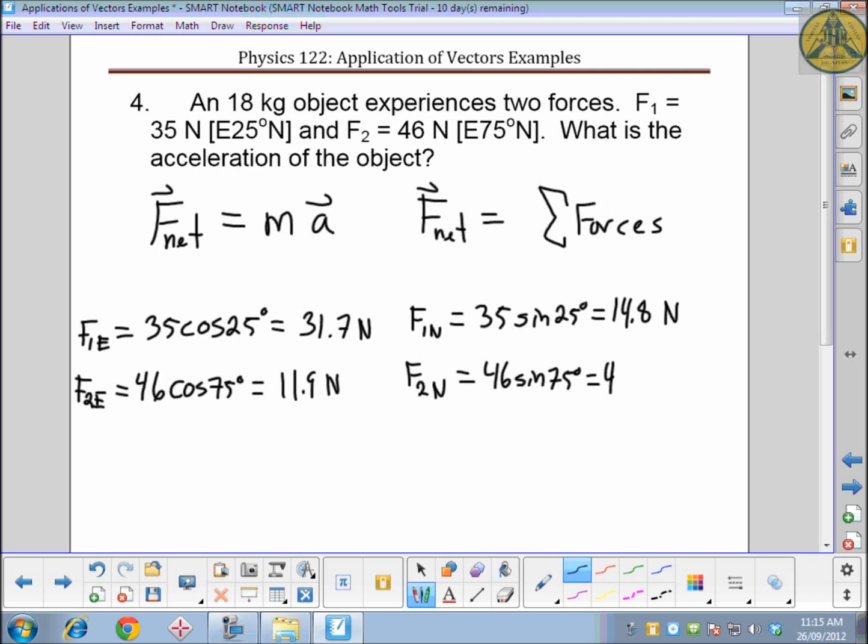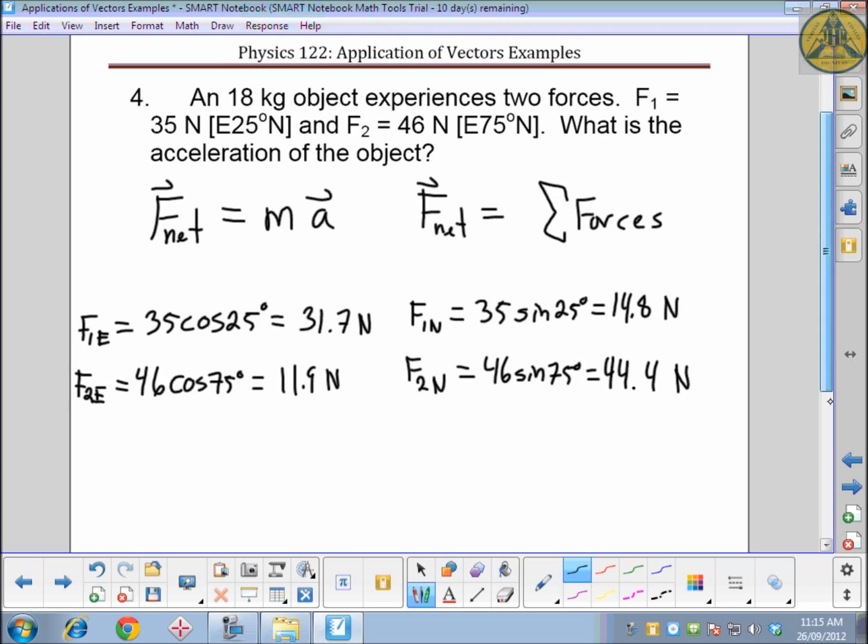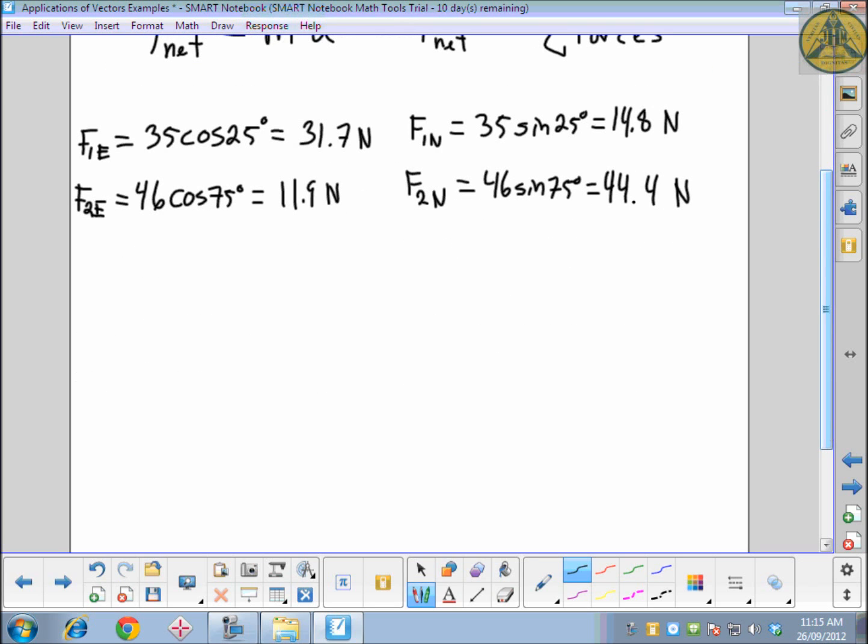So we have our components. And where we need to go with this is our net force, the magnitude of that net force, is the net force in the east squared, added to what the net force is from the north squared, and then square root it. So right below this, I'll show you where that comes out. It should look like kind of a Pythagorean theorem to you.